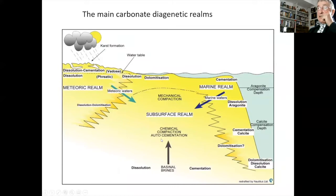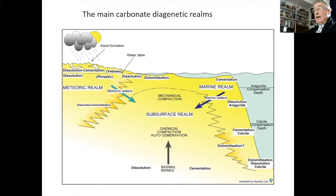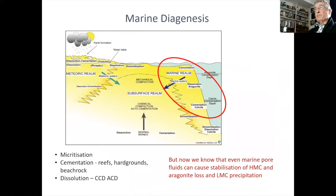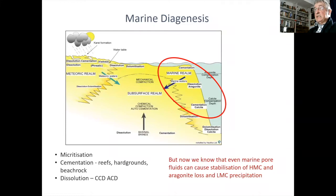For many years I used a diagram simplifying down the three diagenetic realms: the marine realm, where sediment is in contact with marine pore water; the meteoric realm, where it's in contact with water ultimately derived from rain water; and the subsurface burial realm, where we have a complex set of fluids including deep basinal fluids. I used to teach that the important processes in the marine system were micritization, cementation — whether in reefs, hard grounds, or beach rock — and dissolution in relation to the ACD and CCD. But now we know that even marine pore fluids can cause stabilization of HMC to LMC, and also aragonite loss and LMC precipitation.